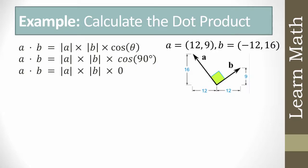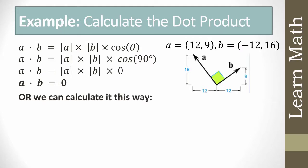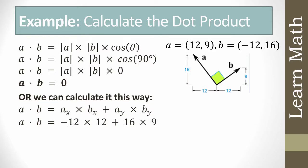We can verify using components: a·b = (ax × bx) + (ay × by). Substituting the values, we again get a·b = 0.